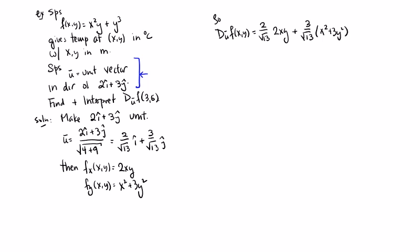And that's our result. Then we plug in our point of interest. So we get 2 over root 13. And this is at the point 3, 5. So plug in 3 for x, 5 for y.